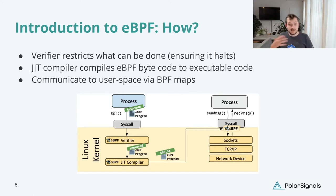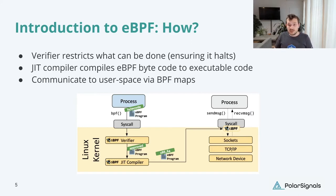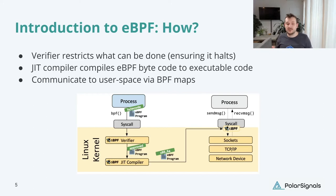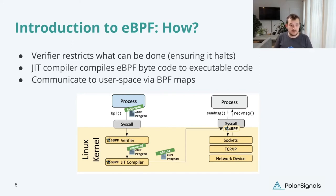In order to ensure the program halts, we restrict what the code can do. If you remember from computer science classes the halting problem — it's actually an unsolvable problem. The way eBPF makes this solvable is by reducing the things that a program can do. Things like potentially endless loops are not allowed; everything in an eBPF program needs to be restricted to ensure it will halt and only use a predefined amount of memory. We can still do bad things that will crash an OS, but we can't essentially escape the security boundaries. There have been bugs in the verifier, so we're not totally safe — but that's the nature of all programs.